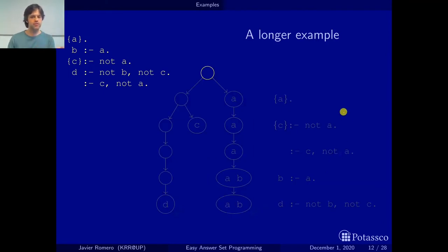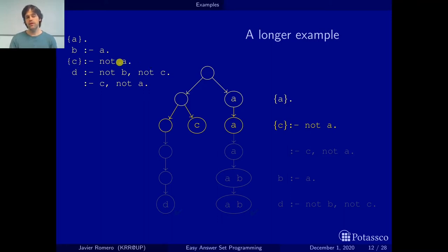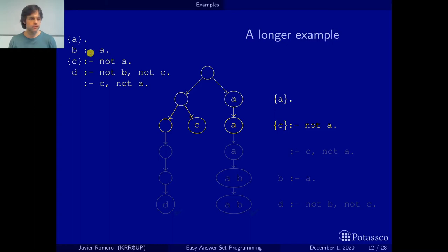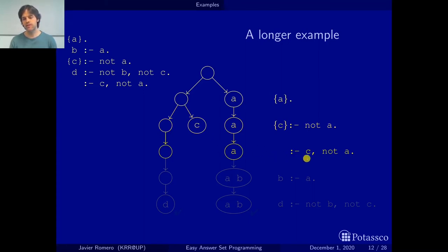There is another valid ordering. First we have the choice rule on A, but at this point we can also apply the choice rule on C if not A — it only depends on A, and the only rule with A in the head has been applied. So we apply it and get two choices on C for the set where A was not there. Then we can already apply the constraint on C and not A, because the rules for C and A have been applied. We eliminate the set that has C and does not have A, leaving us with two sets.